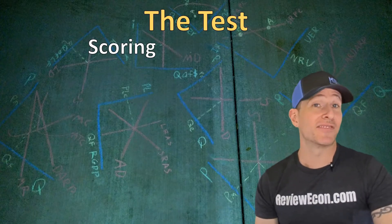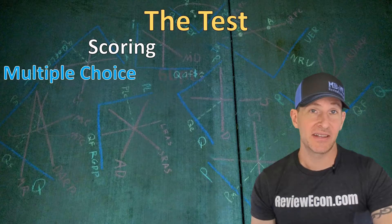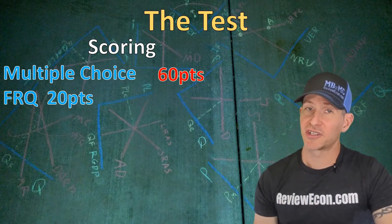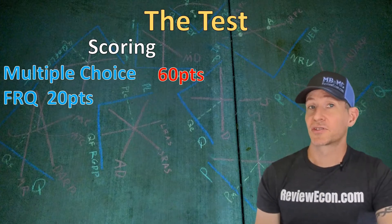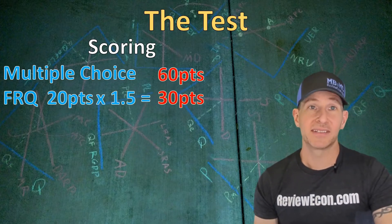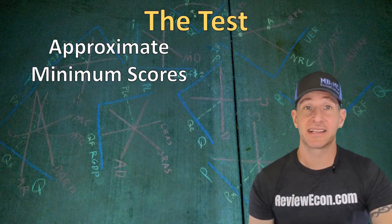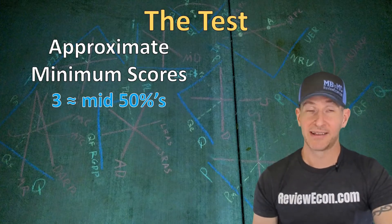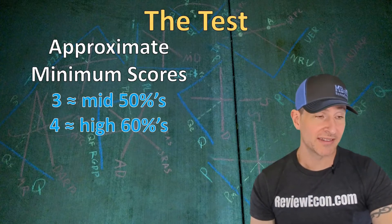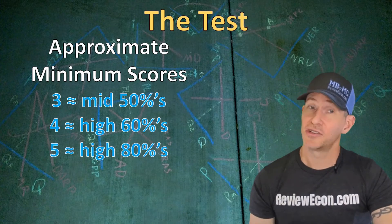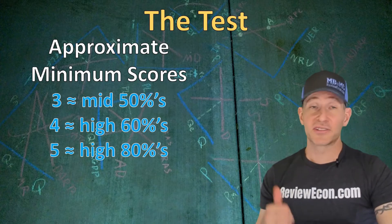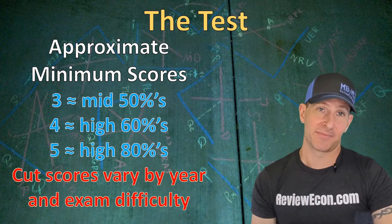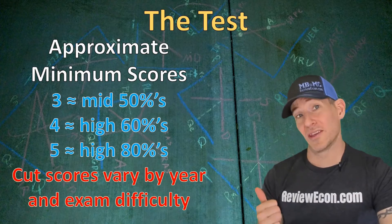When it comes to scoring, it's an out-of-90 score. Your multiple choice score is out of 60 with each question worth one point. For the free response questions, there are a total of 20 points — 10 points on the long question and five points each for the two short questions. The FRQ score is multiplied by 1.5 to give you an out-of-90 score. The approximate minimum percentages needed are a mid-50% for a three, high 60% for a four, and high 80% for a five. These are estimates — actual cut scores vary by year and exam difficulty.